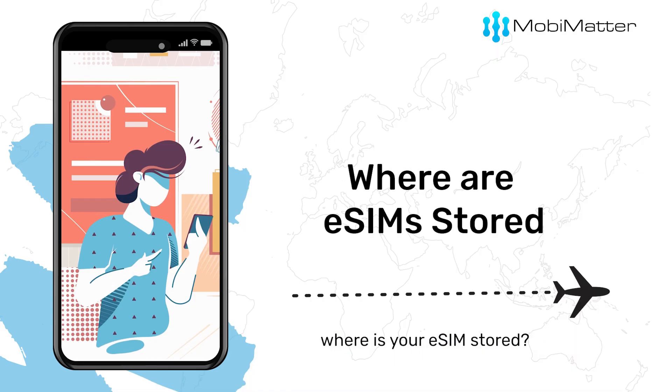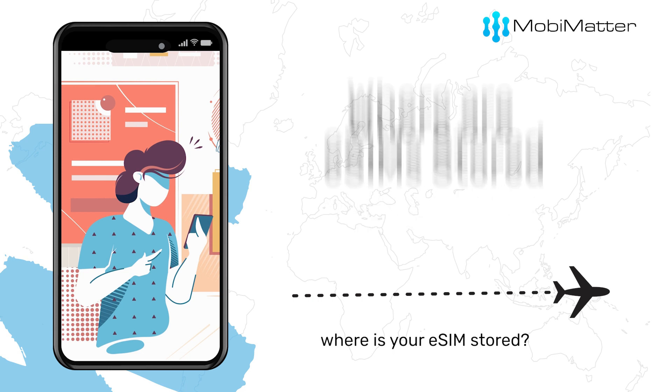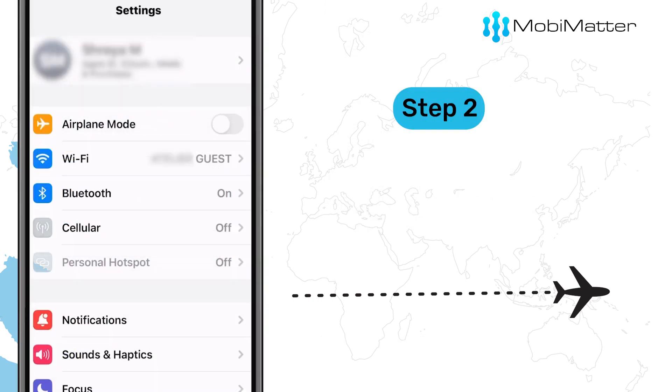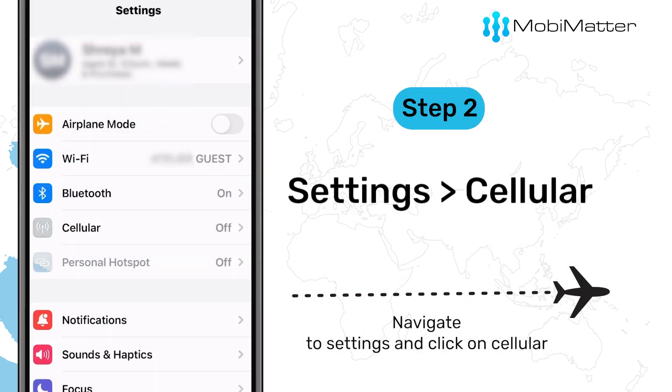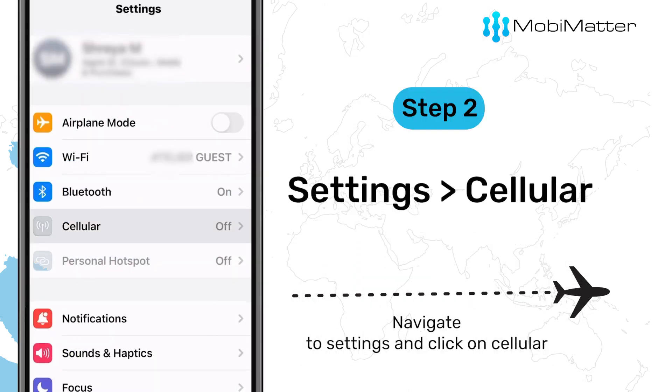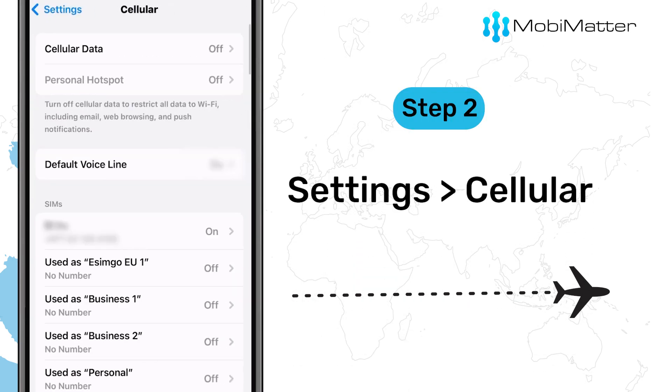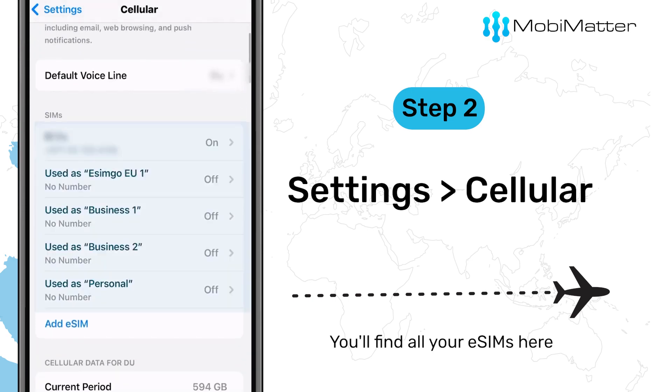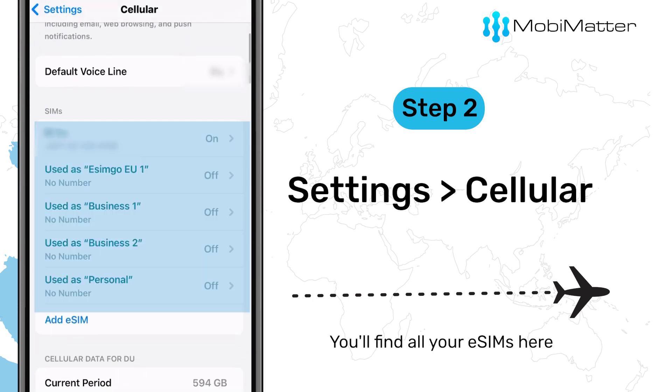Let's start with checking out where your eSIM is stored. Navigate to Settings and click on Cellular. You'll find all your eSIMs here.